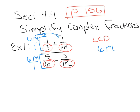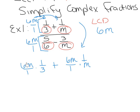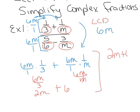We have 6M/1 times 1/3 plus 6M/1 times 1/M — that's what the numerator turns out to be. Simplifying: 6M/1 times 1/3, top times top over bottom times bottom, the 6 and the 3 reduce to make 2M. Then 6M over M — those M's reduce, giving us 6. So the numerator becomes 2M plus 6.